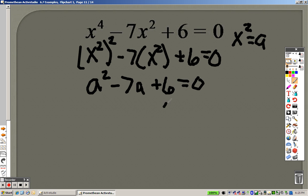Can you think of two numbers that multiply to give you 6 that add to give you negative 7? Well, I can. Negative 6 and negative 1. So, I could rewrite this as a minus 6 and a minus 1. Except it's not a's, it's x squared.